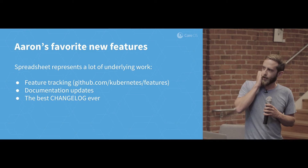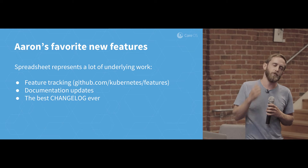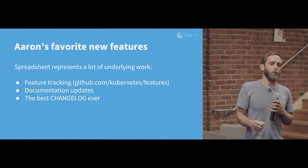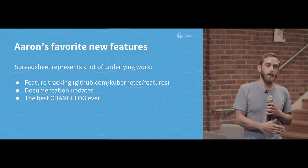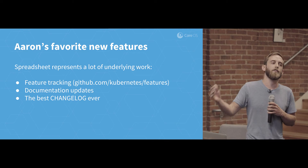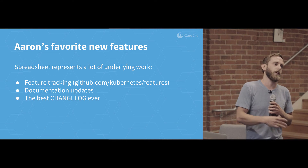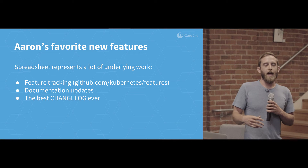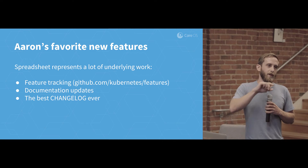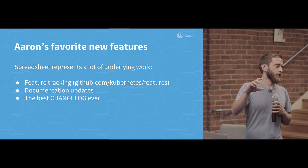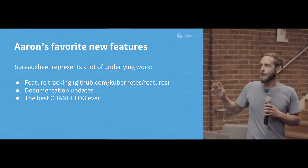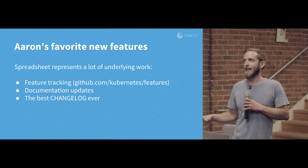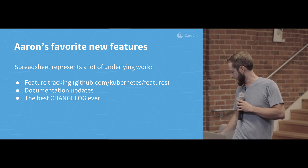Once upon a time a co-worker asked me how do you keep track of new features in Kubernetes, and my response was: go through the proposals directory in the repository, see anything that's changed recently, go through any open PRs that touch anything in the proposals directory, and then just scrape the types.go files for the API objects — that's how you figure out what's going on in Kubernetes. So I think this new feature tracking is really, really nice and something that in 1.4 has been pretty awesome.